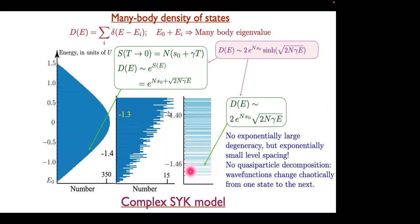If you want every single level, you have no choice but to diagonalize the whole thing with a computer. But if you're happy to do even a bit of coarse-graining over an exponentially small energy interval — certainly about 1/N, maybe even faster — then independent of which u_{alpha beta gamma delta} you chose, you will get this result.